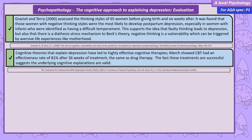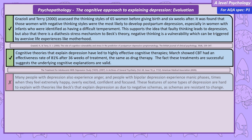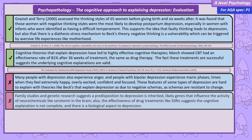However, cognitive explanations are not full explanations of depression. Many people with depression also experience anger, and people with bipolar depression experience manic phases — times when they feel extremely happy, overly excited, confident and focused. These features of some types of depression really can't be explained by theories like Beck's. There is also significant evidence for a biological origin for depression. Family studies and genetic research suggest predisposition to depression is inherited, likely genes that influence the activity of neurochemicals like serotonin in the brain, and the effectiveness of drug treatments like SSRIs suggests there is a biological aspect to depression.